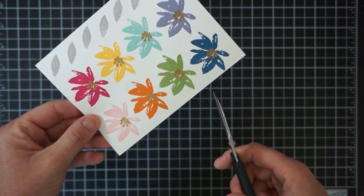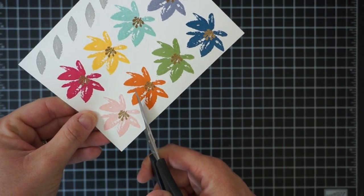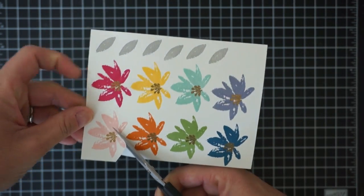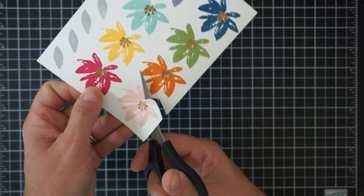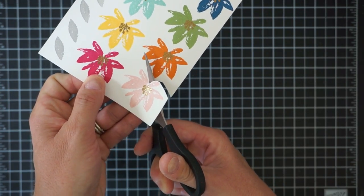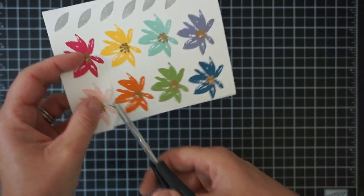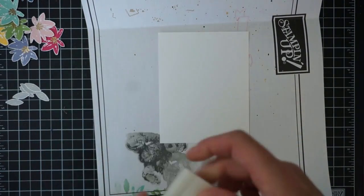Now the fun part begins - I fussy cut out all of these flowers and the leaves. It actually went faster than you think. I don't mind fussy cutting - I just turn on some music and it's pretty therapeutic. I just sat down and cut all of these out with my paper snips.